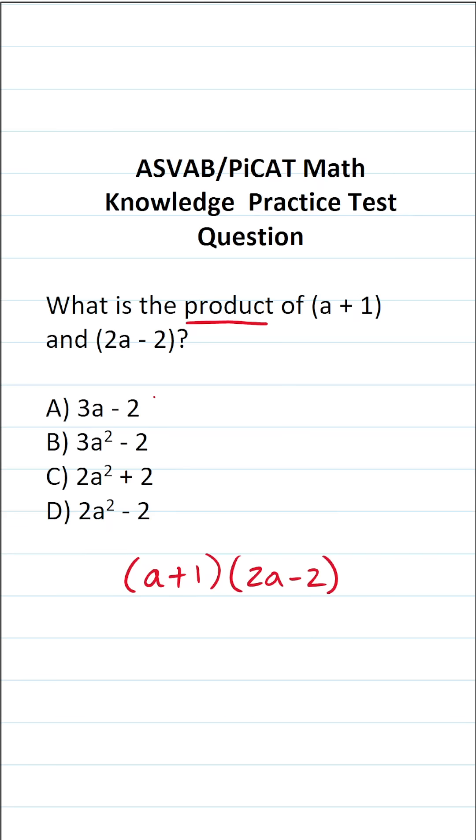All right, so in order to multiply these two polynomials together, we have to follow what's called the FOIL method. That is to say, we're going to take A and multiply it here as well as here. Then we're going to take 1 and multiply it here as well as here.